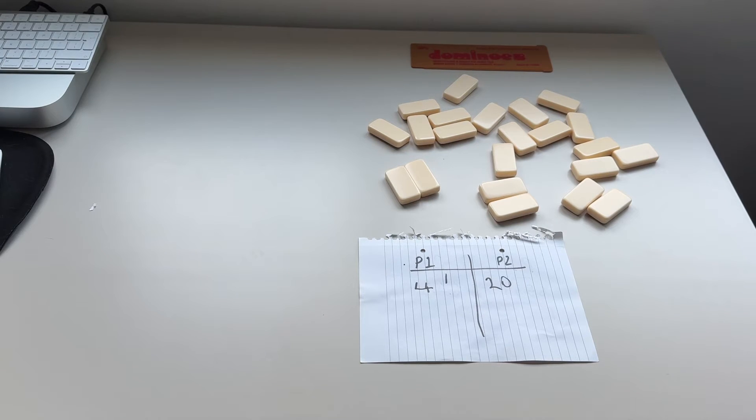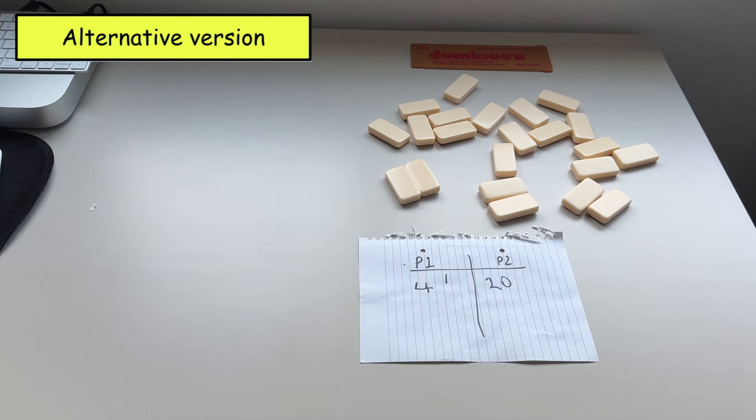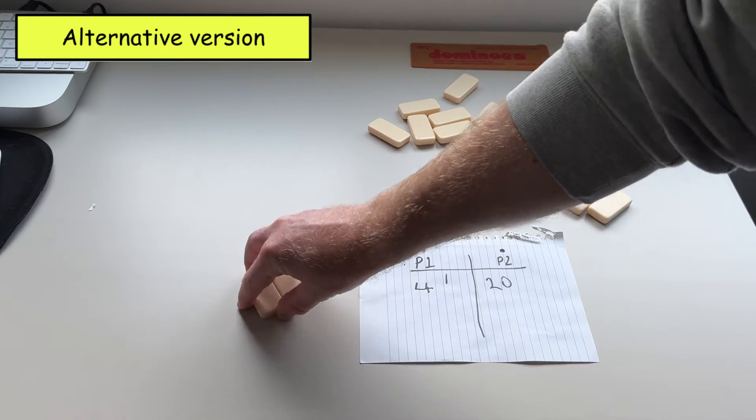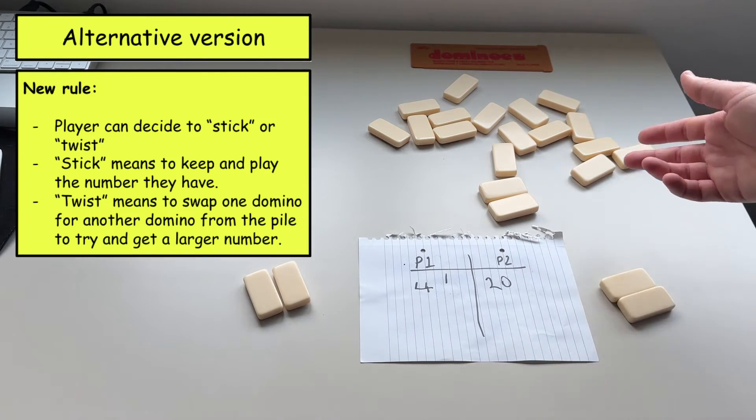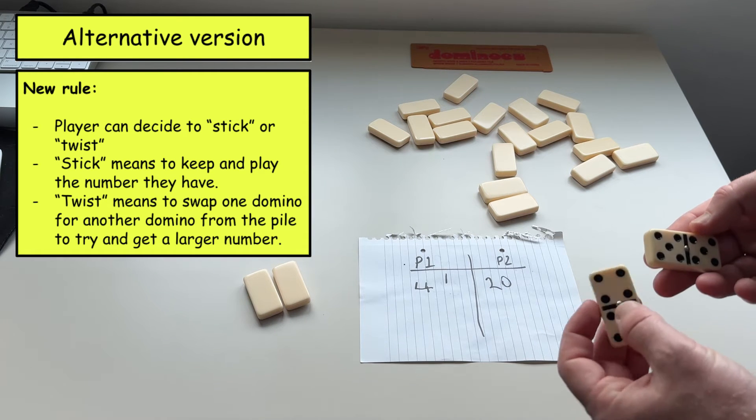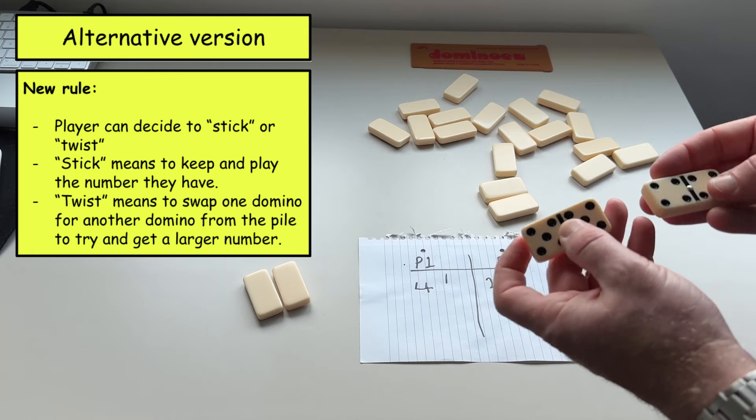So in this next example we are going back to playing the four digit version of the game and I'm now going to show you a rule that you can introduce to add extra fun and excitement to the game. So just as before the players will pick two dominoes each and in secret they will look at the dominoes that they have.